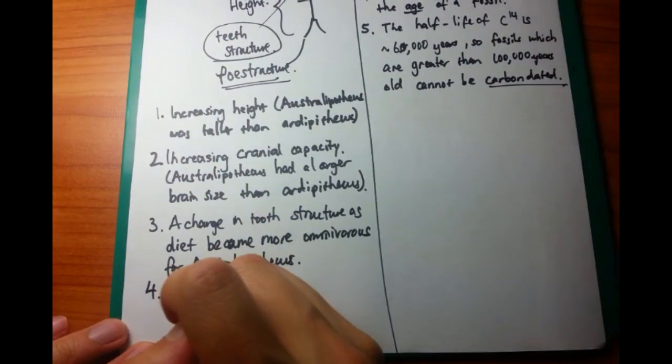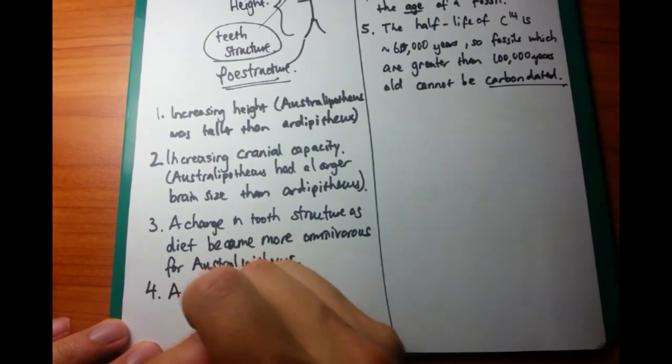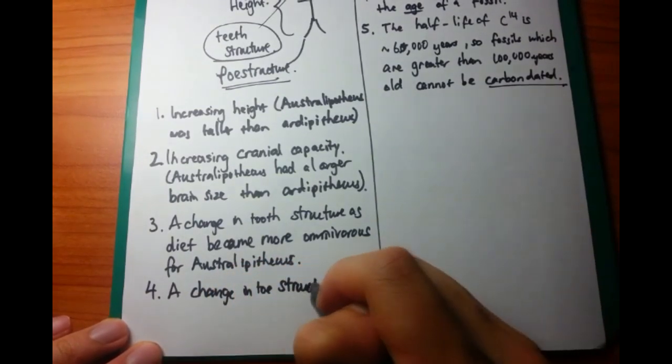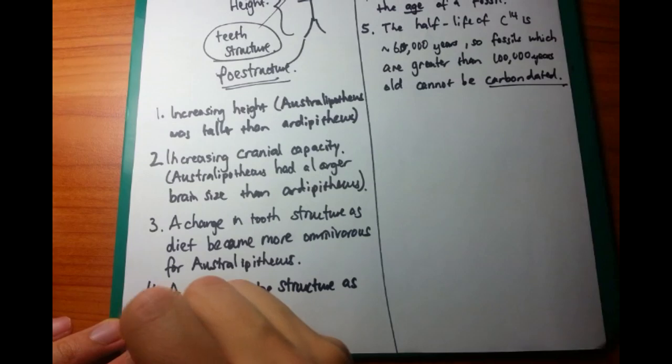The final thing we're going to talk about is toe structure. And we talked about how the more primitive humanoids, they tend to be stooped over, and sometimes even walked on all fours.